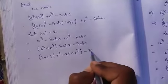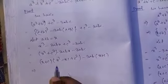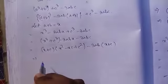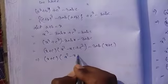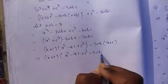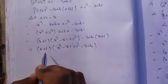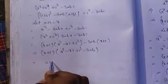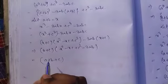Taking 3ab as common from the remaining terms gives 3ab(x + c). So from the full expression we take (x + c) as common: (x + c)(x² - xc + c² - 3ab).